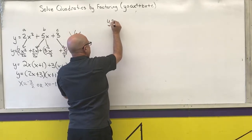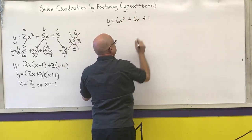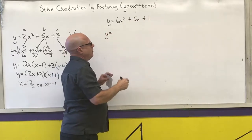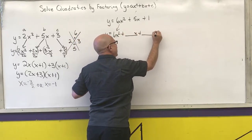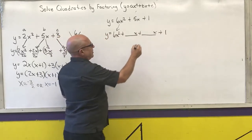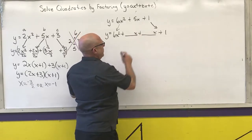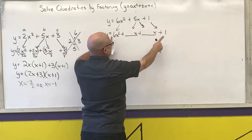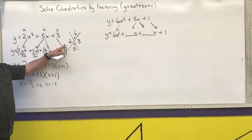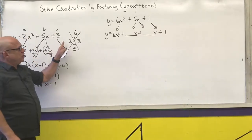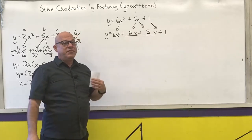Next one: y equals 6x squared plus 5x plus 1. Before I make my diamond, I'm going to do my setup — copy the first and last terms and split the middle term. I need two numbers that multiply to 6 that add to 5. It's the exact same work as before, so I need a 2 and a 3. I'll put the 2 here and the 3 here, and factor by grouping.